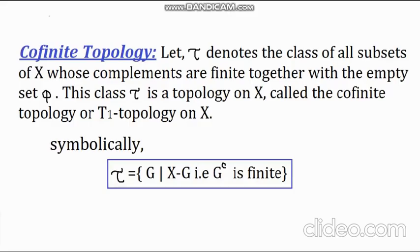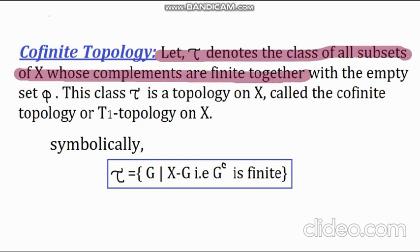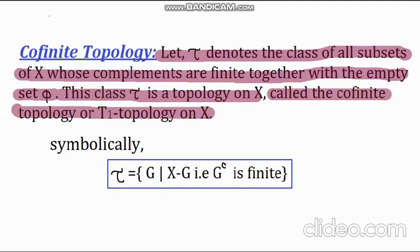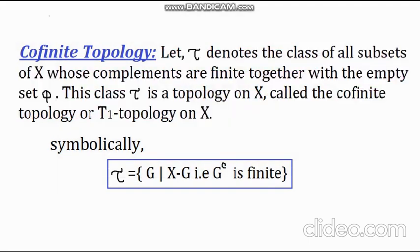Now let's move into the most important part of the video, that is co-finite topology. Well, this is very important. Formally, let τ denote the class of all subsets of X whose complements are finite together with the empty set φ. This class τ is a topology on X, called the co-finite topology, or T1 topology on X. Now this is very obvious if you try to match it with its name, that is co, which stands for complement, and finite which stands for finite set. That is those sets whose complements are finite.